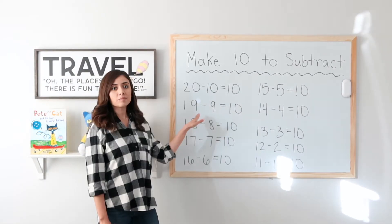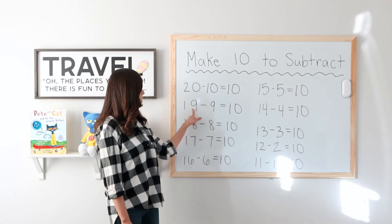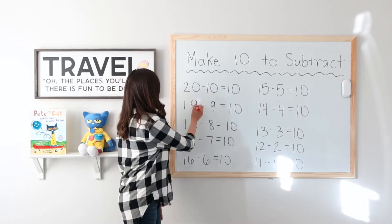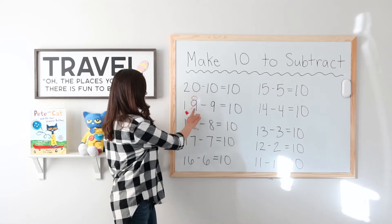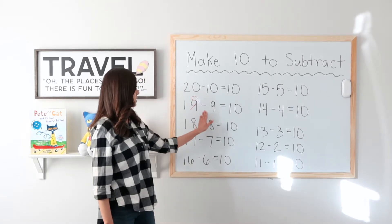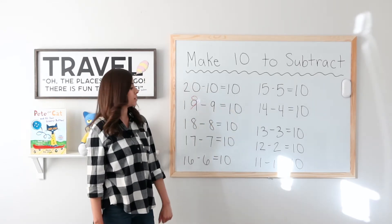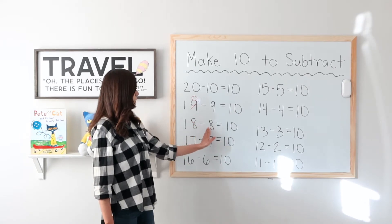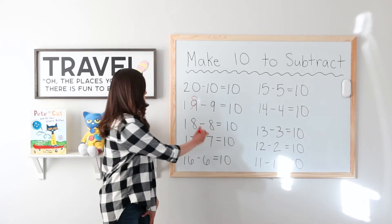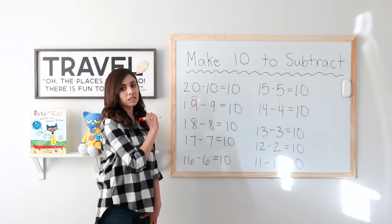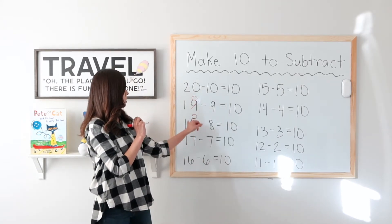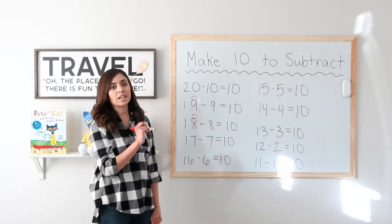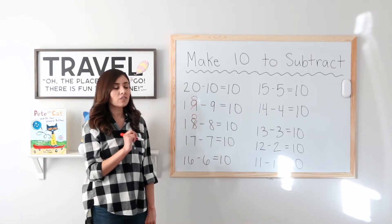Watch this. 19 minus 9, so I cross off the 9 in the 1s place because I'm taking it all away and it becomes 0. So that's 10. 18 minus 8, cross off the 8 that's being subtracted and it turns into a 0. So that would be 10. So that's how it works with all of these.